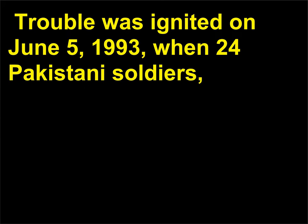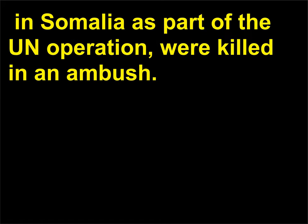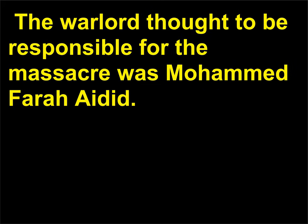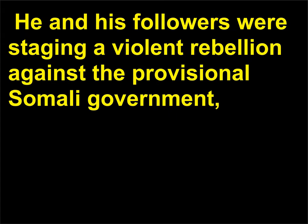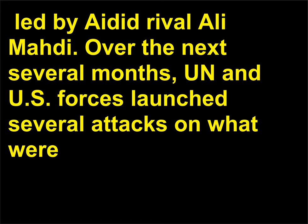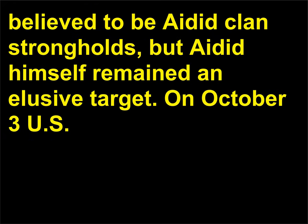Trouble was ignited on June 5, 1993, when 24 Pakistani soldiers in Somalia as part of the U.N. operation were killed in an ambush. The warlord thought to be responsible for the massacre was Mohamed Farah Aidid. Somalia's government ordered Aidid's arrest; his capture was an imperative to peace, as he and his followers were staging a violent rebellion against the provisional Somali government led by Aidid rival Ali Mahdi. Over the next several months, U.N. and U.S. forces launched several attacks on what were believed to be Aidid clan strongholds, but Aidid himself remained an elusive target.